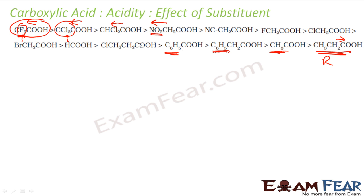So if you are given five or six compounds and asked to order them by acidity, the one with the electron-withdrawing group attached is more acidic. CF₃ is the maximum electron-withdrawing group, making trifluoroacetic acid the most acidic.